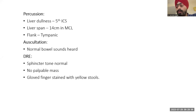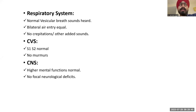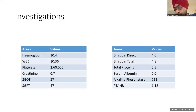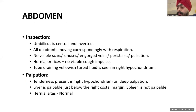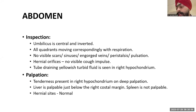On abdominal examination: umbilicus is central and inverted, all quadrants moving correspondingly with respiration, no visible scar, sinus, engorged veins, peristalsis, pulsation. A tube draining yellow-colored fluid is seen in the right hypochondrium. On palpation, tenderness is present in the right hypochondrium. On deep palpation, liver is palpable just below the right costal margin. Spleen is not palpable. On percussion, liver dullness is felt in the fifth intercostal space, liver span is 14 cm in the midclavicular line. On DRE, finger is stained with yellow stool.